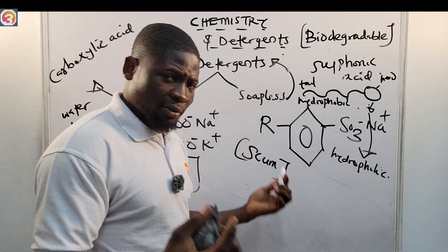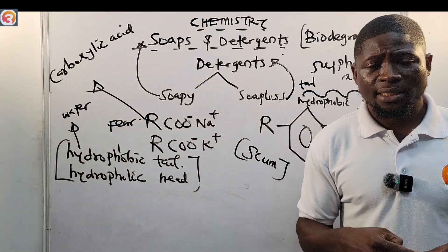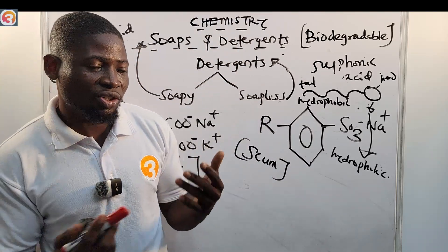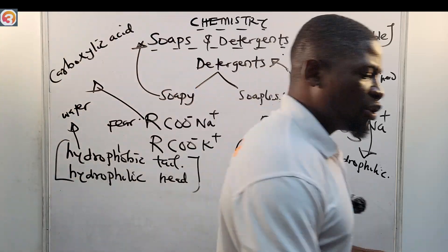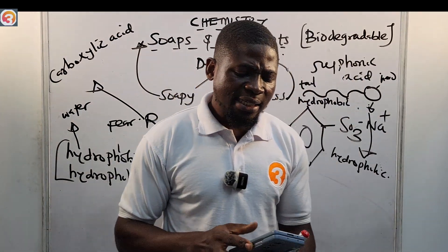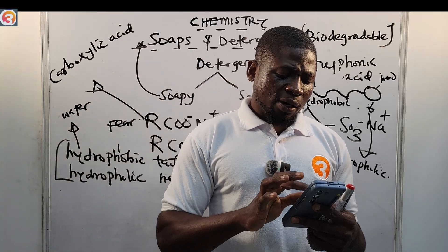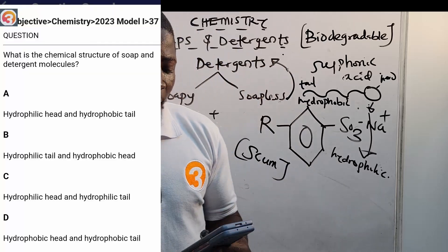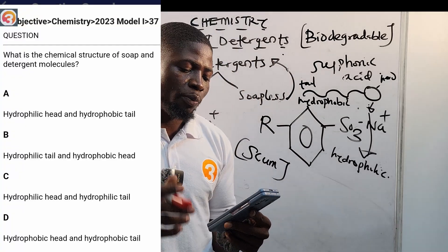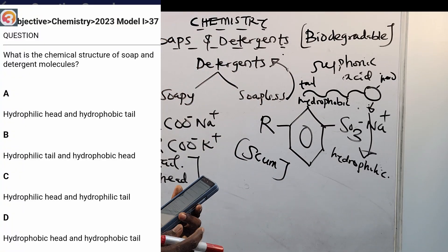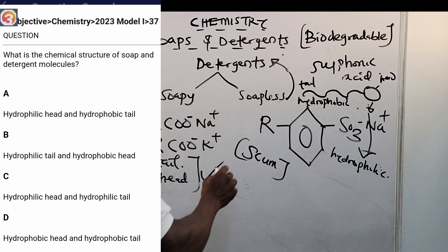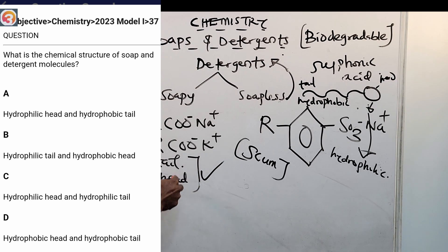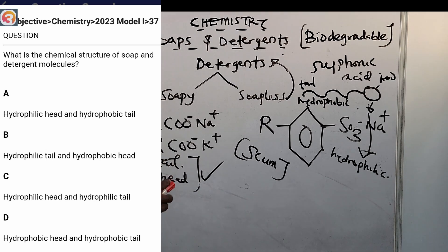That is what you need to know about soaps and detergents. Now let us go to the application and answer some questions. 2023 question number 37: what is the chemical structure of soap and detergent molecules? The answer is obviously on the board — hydrophilic head and hydrophobic tail. That is option A. Correct.